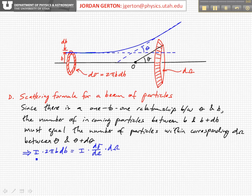Okay, so now we have this expression for the number of particles which are passing through this annular differential cross-section dσ, and that has to equal the number of particles which are scattered into a particular differential solid angle dω.